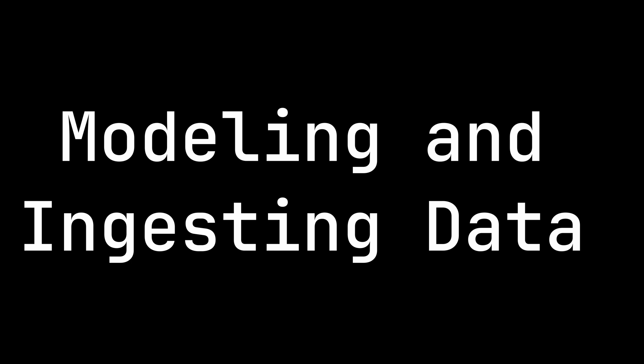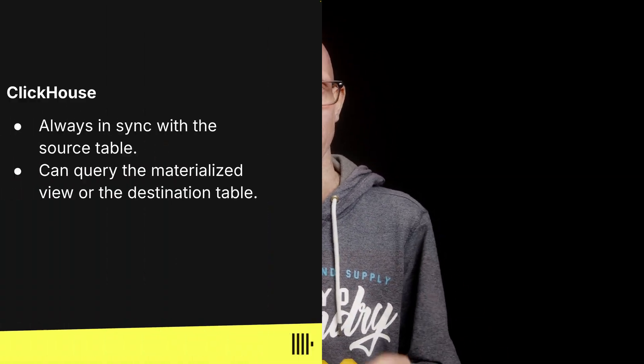The first thing we need to do in any data project is model and then ingest our data. BigQuery and ClickHouse both use column-oriented storage, and you'll see the best performance if you query a single table. The approach to data modeling is similar, although materialized views play a key role when using ClickHouse.